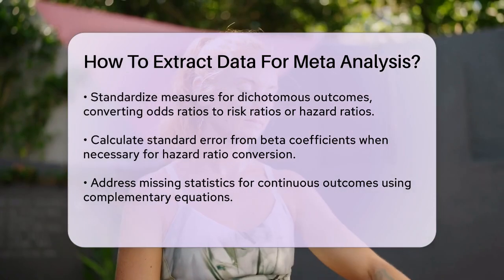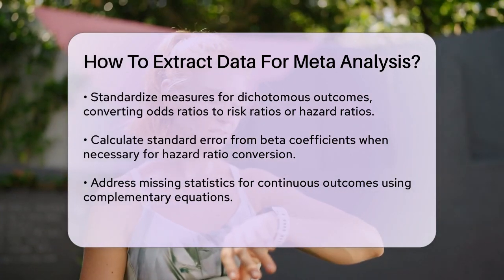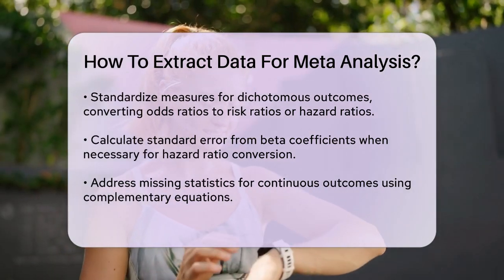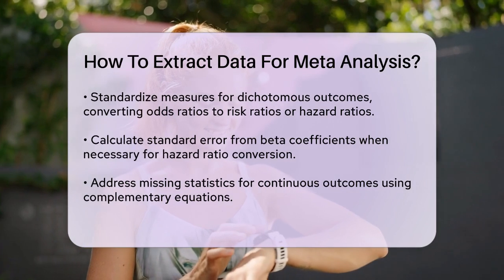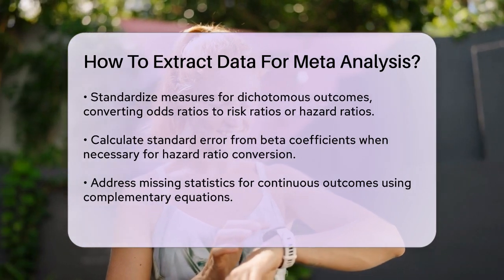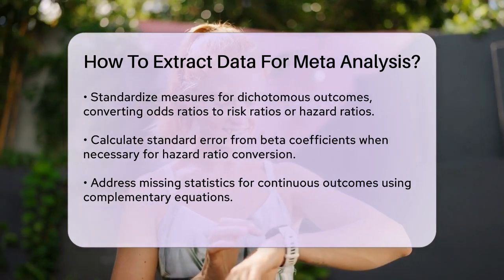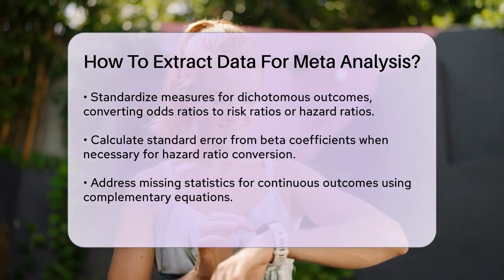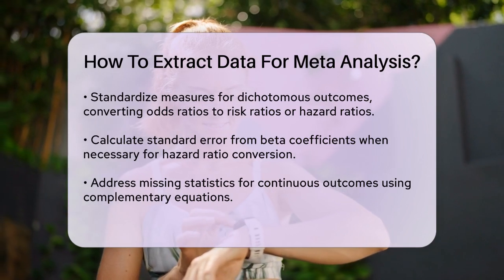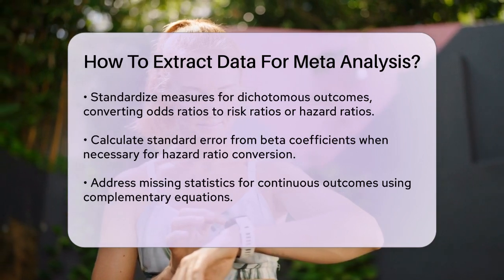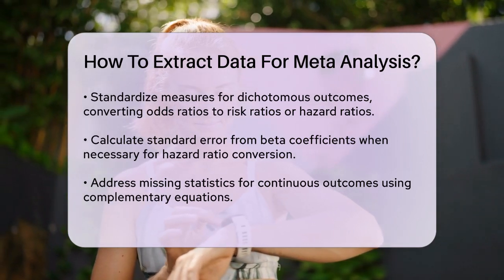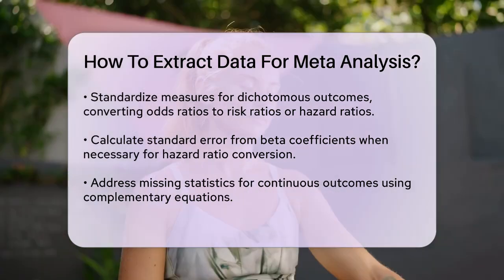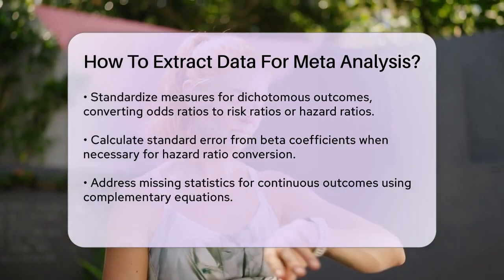Continuous outcomes can be tricky if the mean, standard deviation, or sample size is missing. You might need to use complementary equations to obtain the necessary statistics. For instance, if you only have the median and interquartile range, you can use certain formulas to estimate the mean and standard deviation.